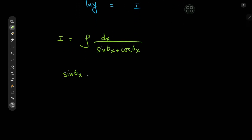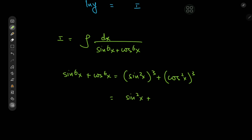Notice that we can write sine to the sixth of x plus cosine to the sixth of x as (sin²x)³ plus (cos²x)³ — that's the a³ + b³ form. We know exactly how to factorize that: we'll have (a + b), which in our case is sin²x + cos²x.